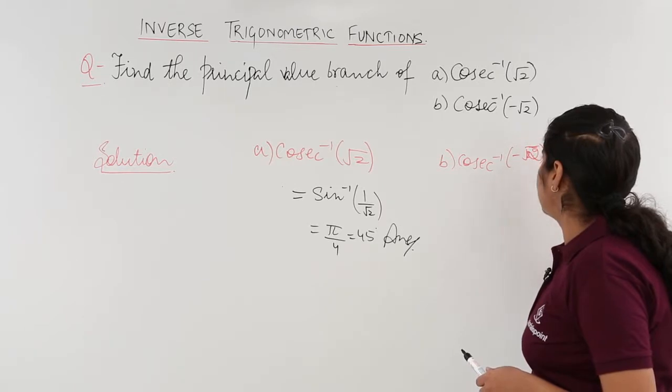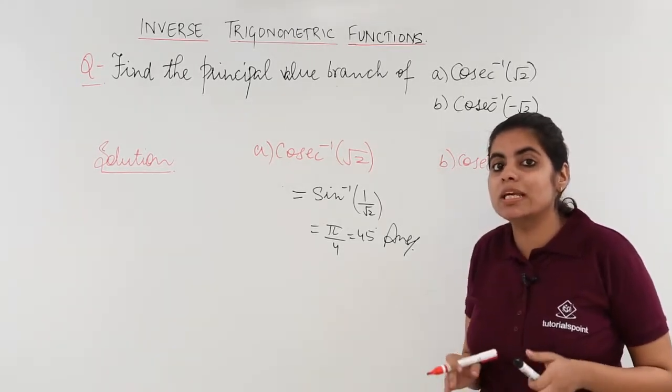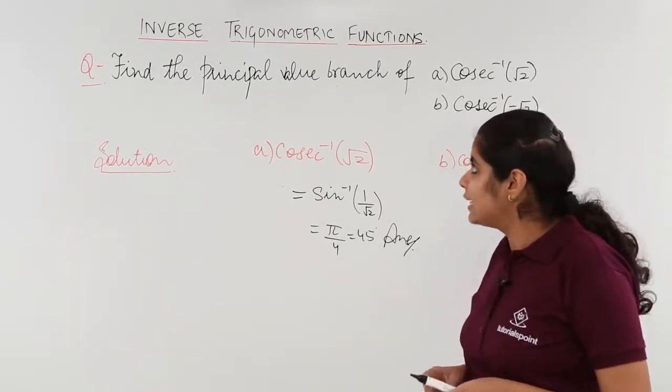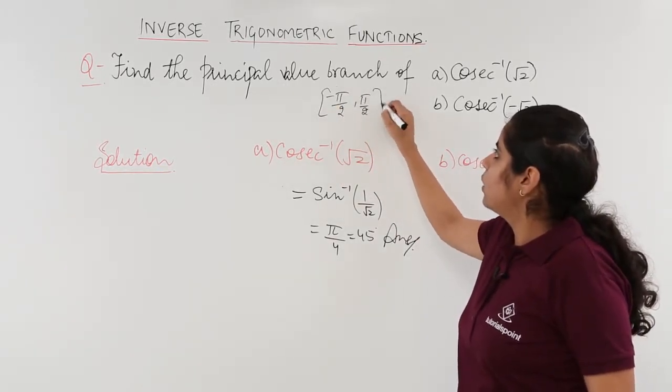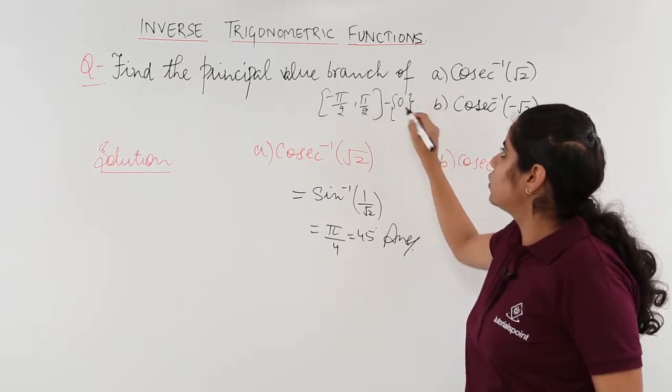Now we already know one simple thing: cosecant inverse range lies between minus pi by 2 to pi by 2, and you cannot include 0.